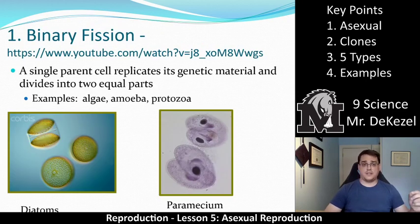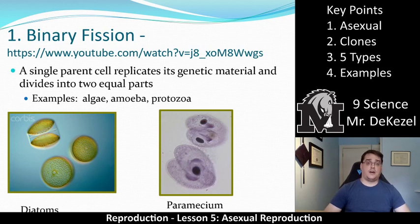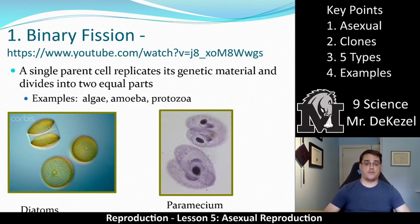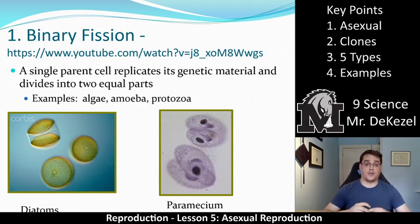The first type is called binary fission. This is essentially mitosis for things like bacteria or algae. There's a YouTube video linked in your notes. It is a single parent: that cell replicates its genetic material and divides into two equal parts. This is essentially mitosis of very simple, very small organisms like bacteria, algae, amoeba, and protozoa.